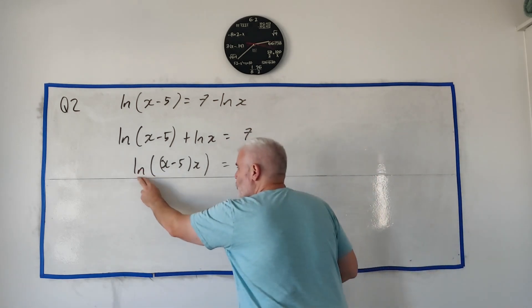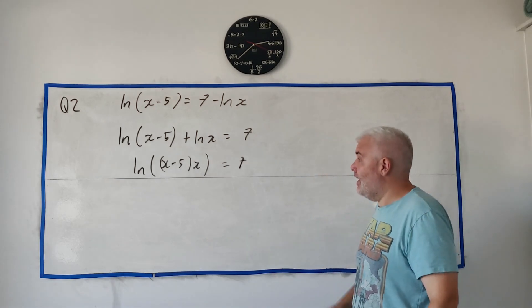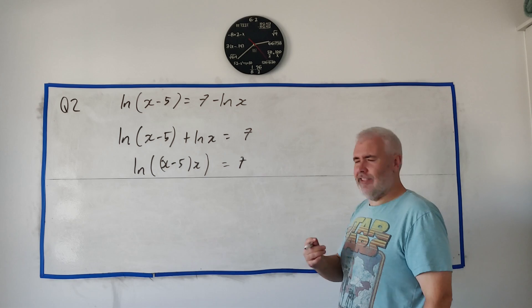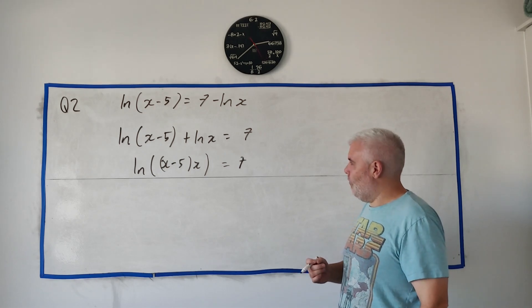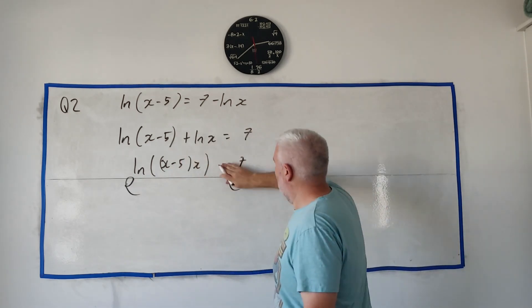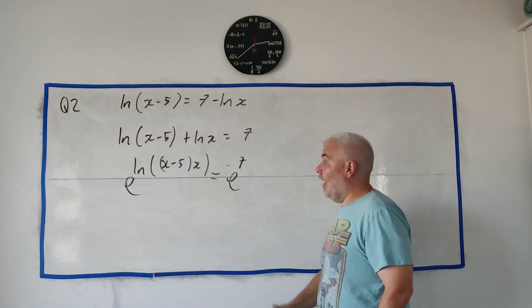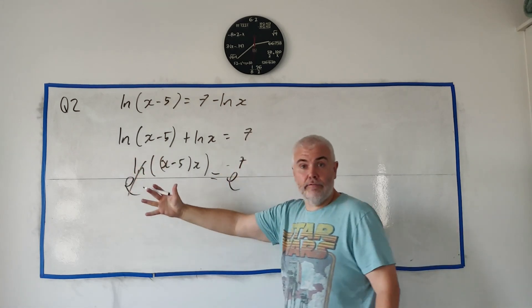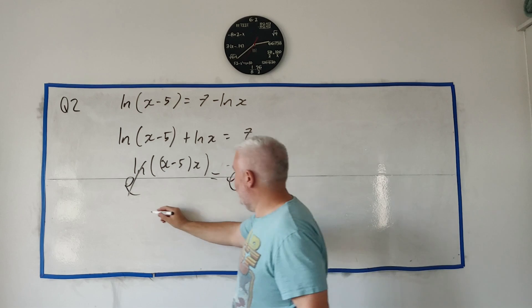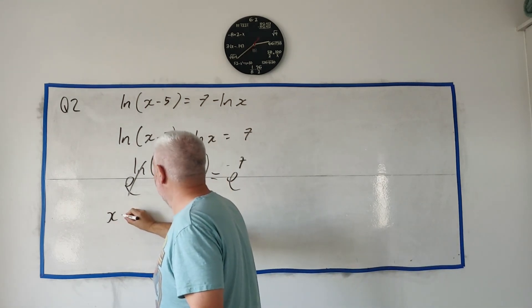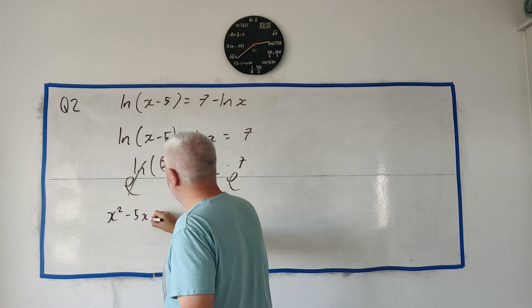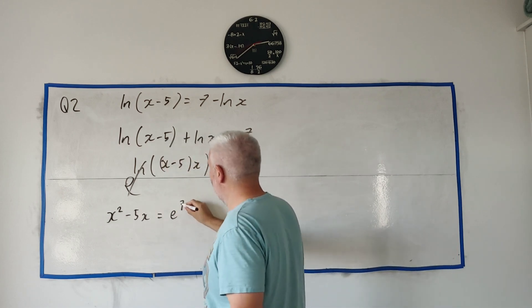At this point, now that I have just one single natural log, now I would raise both sides to E. Or E to the power of both sides. Basically, I'd put an E on both sides. Let's move the equals to the middle. And on the left side, this would destroy it. The E and the natural log destroy each other. So we'll be left with, to clean this up, as x. Let's multiply this out. x squared minus 5x equals E to the power of 7.